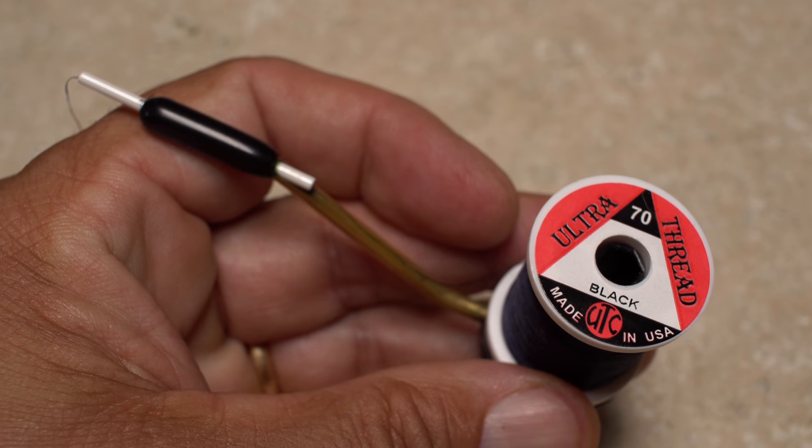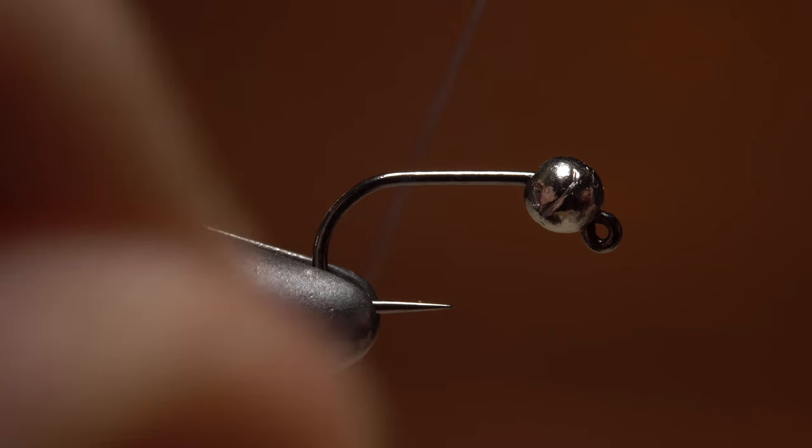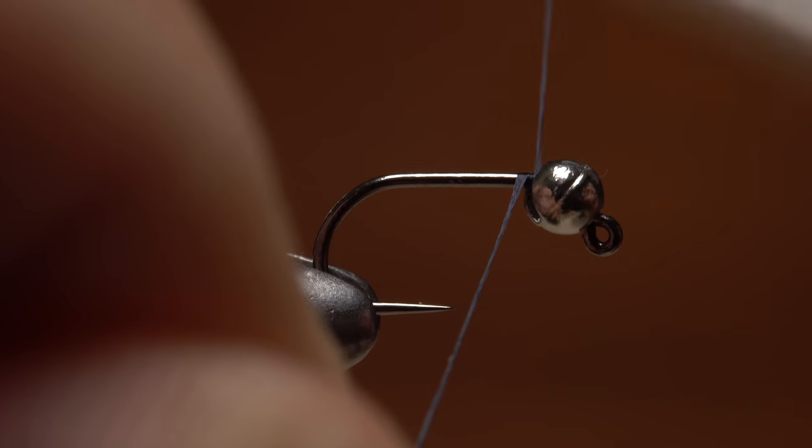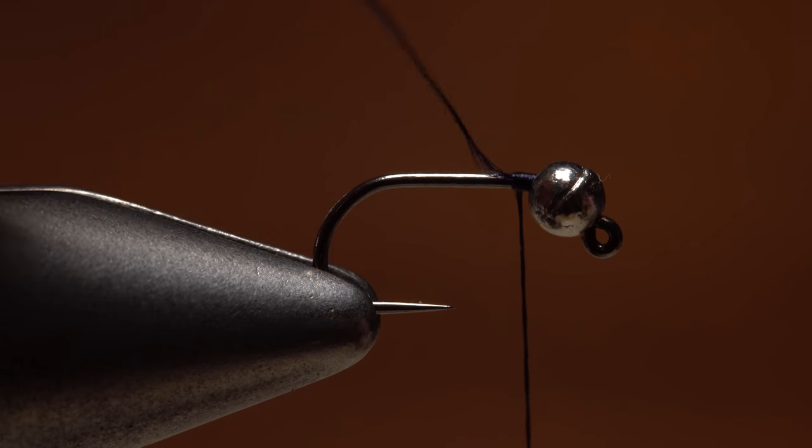For thread, I've loaded a bobbin with a spool of black UTC 70 denier. Get the thread started on the hook shank immediately behind the bead, and take a few wraps rearward before snipping or breaking off the tag.